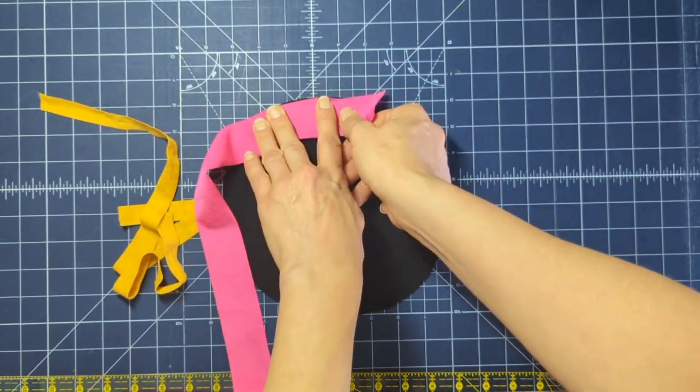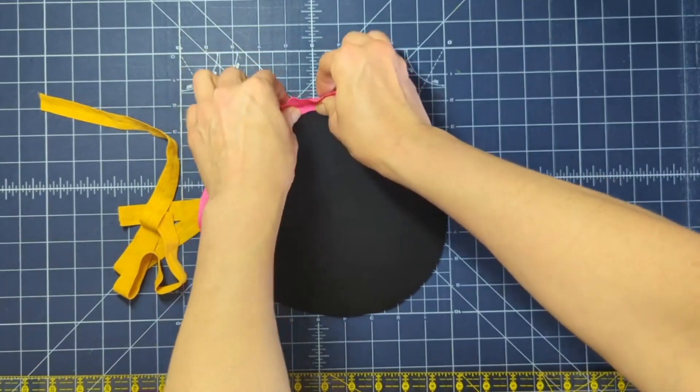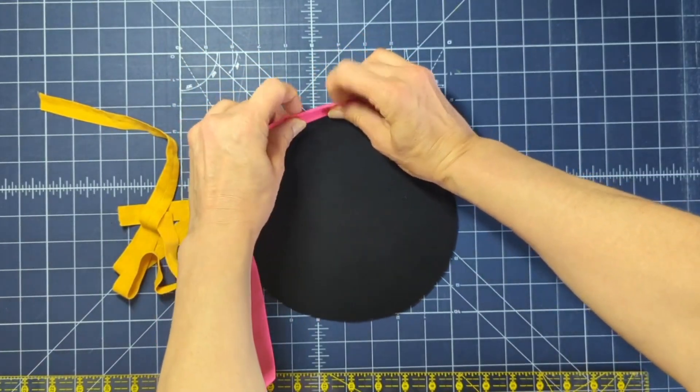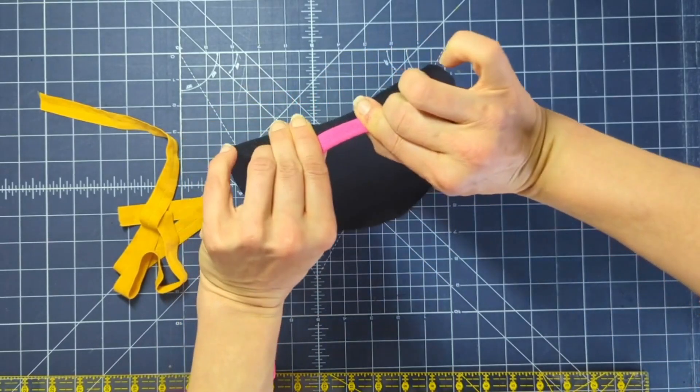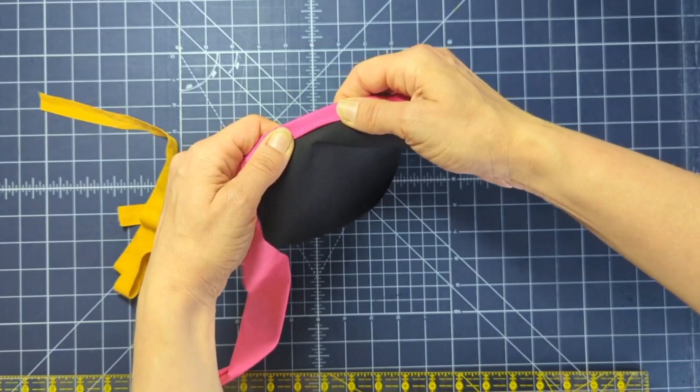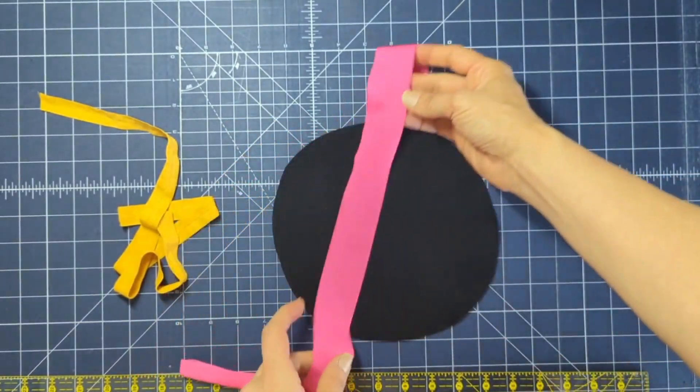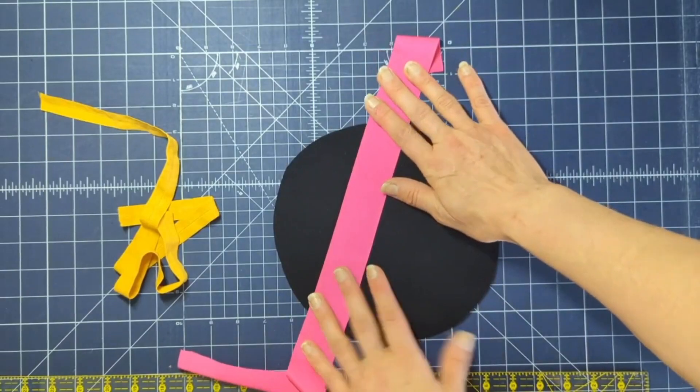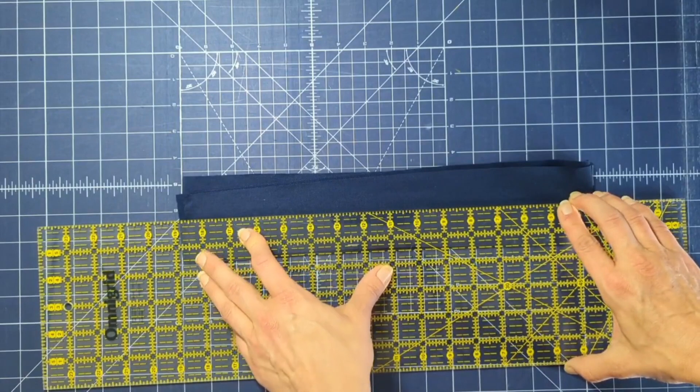If I line it up with the edge of my fabric, right sides together, stitch it about 3/8 of an inch, wrap my binding piece around to the back side, I can then stitch it down. I'll have this nice clean bound edge and I can do that the whole way around the outside of my piece with one continuous yardage piece, or if I prefer I can cut strips.